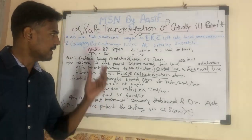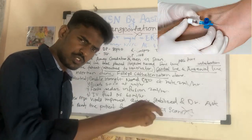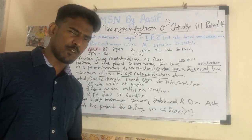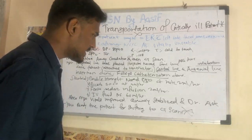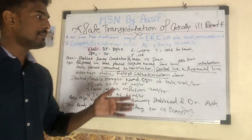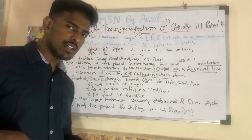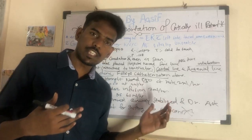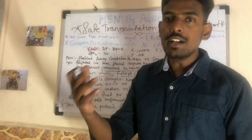We know BP is 80/40, which is very low, so we first took an IV line and started peripheral norad. We prepared it as 4 by 100 - take 2 ampoules of norad mixed with 100 ml of NS - and started the infusion at 3-4 ml per hour as per order. At the same time, the doctor took an ABG sample and sent it for testing.